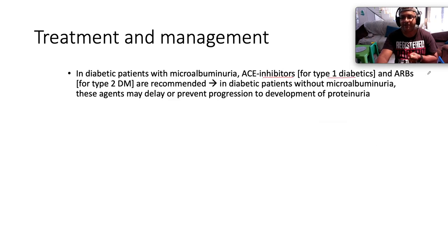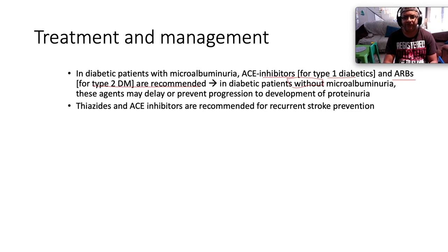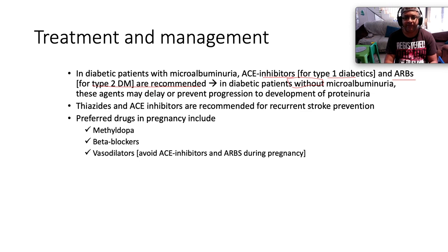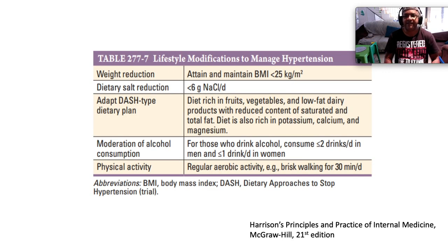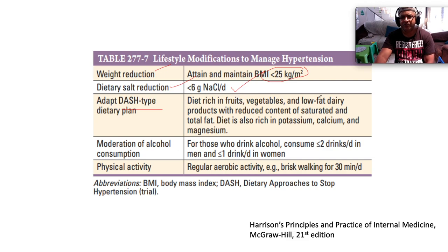ACE inhibitors, ARBs, and aldosterone antagonists benefit stable heart failure — beta blockers and spironolactone also confer mortality benefit. In post-MI patients, use beta blockers, ACE inhibition, and aldosterone antagonists. In diabetic patients with microalbuminuria: ACE inhibitors are recommended for type 1 diabetics, and ARBs for type 2 diabetics — though ACE inhibitors can also be used in type 2. In diabetic patients without microalbuminuria, these agents may delay or prevent development of proteinuria. Thiazides and ACE inhibitors are recommended for recurrent stroke prevention. In pregnancy, ACE inhibitors and ARBs are teratogenic — instead use methyldopa, beta blockers, or vasodilators.